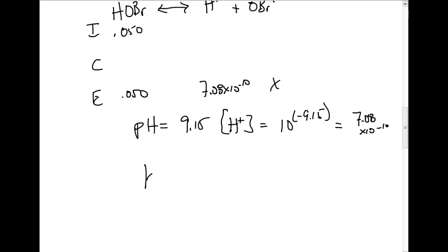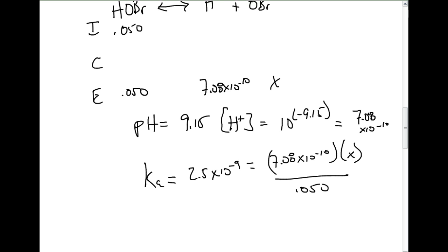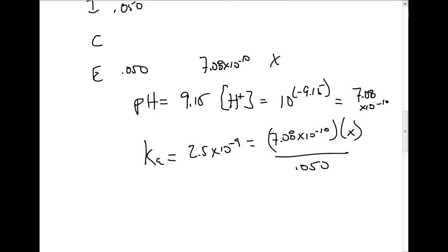Our Ka value was given in the problem as 2.5 times 10 to the negative 9th, equals 7.08 times 10 to the negative 10th multiplied by x over 0.050. We're assuming x is small on the minus x, and then we're just going to solve for x. X is going to equal 0.177.